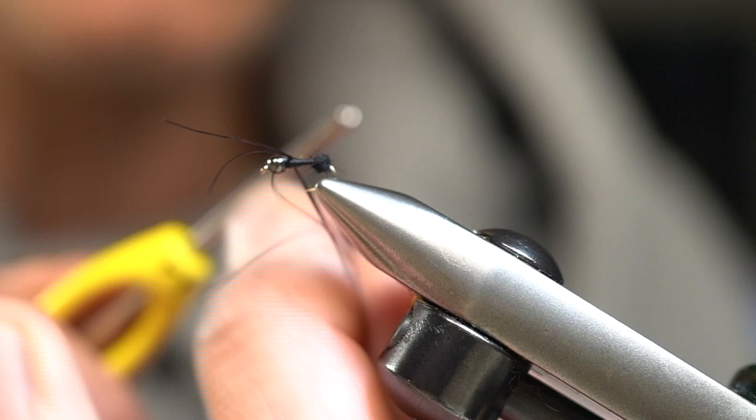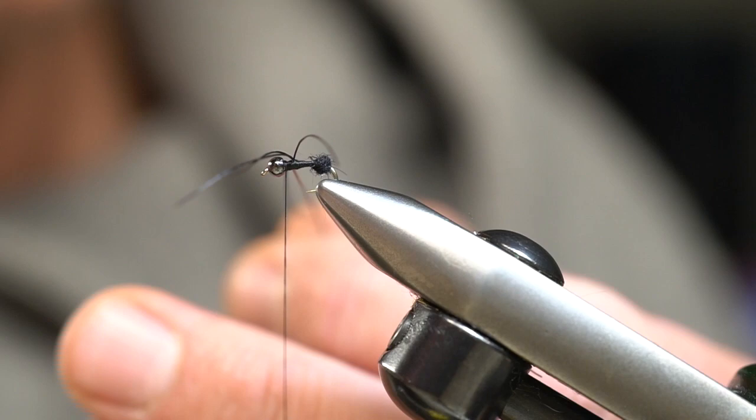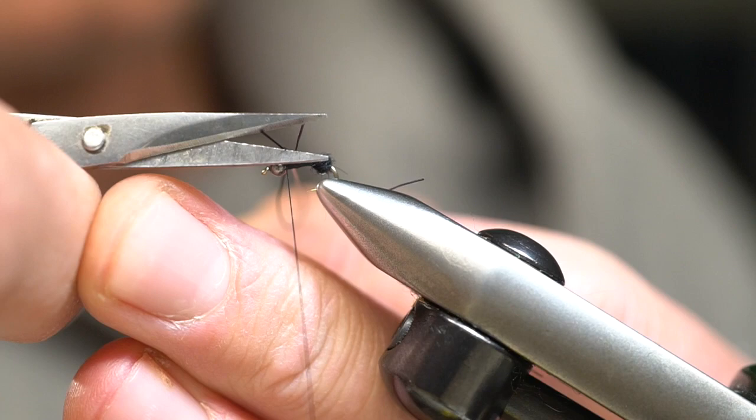From my experience, the smaller the rubber legs, the more challenging it can become. This is doable, this is acceptable right here. Once we lock the legs in, we're going to trim the legs about the same length as the shank.